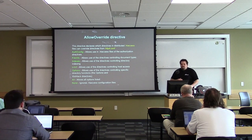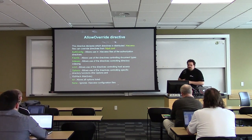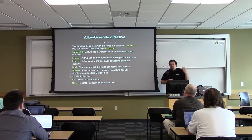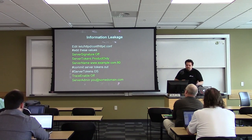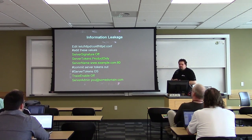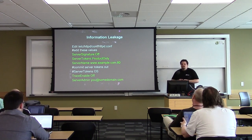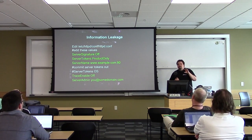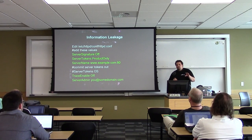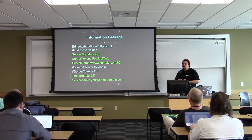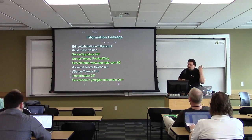The AllowOverride directive controls what you can and can't do with .htaccess files. Try not to use them. That covers the basic configuration. Now we're going to talk about information leakage — turning off all the identifiers that show our web server is running on Linux.